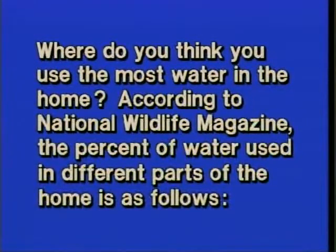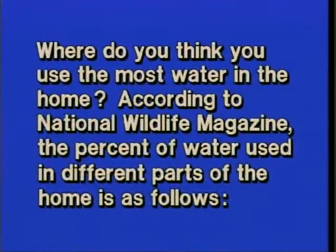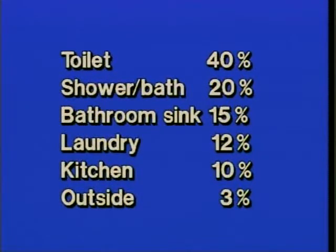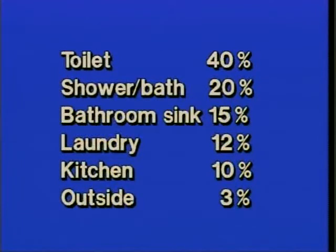Our emphasis here is on making the circle graph rather than interpretation — interpretation is almost obvious. The problem: where do you use the most water in the home? According to National Wildlife Magazine, the percent of water used is: toilet 40%, shower or bath 20%, bathroom sink 15%, laundry 12%, kitchen 10%, and outside use 3%.